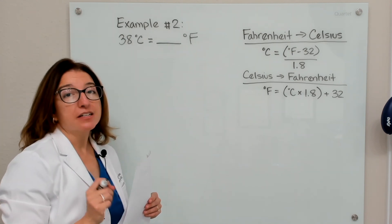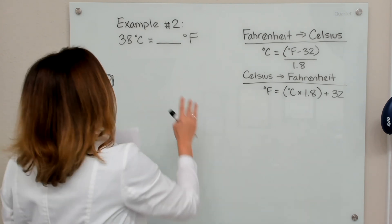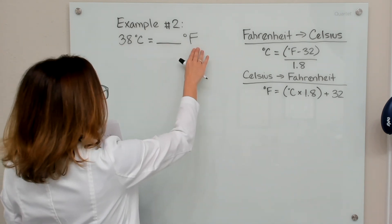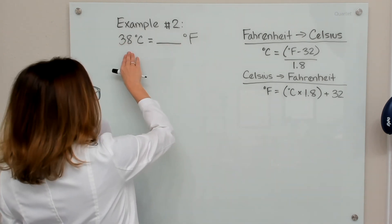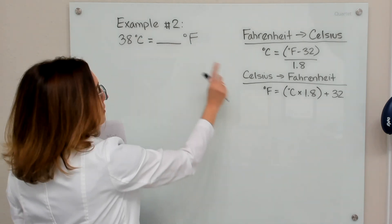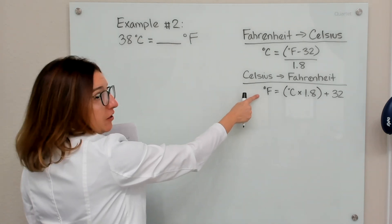All right, let's work through our second example problem. In this problem, we're going from Celsius to Fahrenheit. So we need to convert 38 degrees Celsius to Fahrenheit. So we're going to use this equation right here.